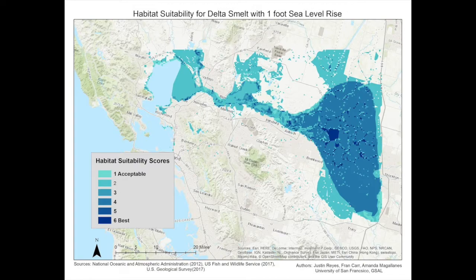Suitable habitat for Delta smelt includes the eastern part of San Pablo Bay, all of Suisun Bay, and the whole Delta. The most suitable habitat may be further east in the Delta where there are more sloughs, channels, food sources, tributaries, and wetland habitats available. Although they may be found in San Pablo Bay and Suisun Bay, it is unlikely they will definitely inhabit or migrate to those areas due to higher salinities. It is more likely that they will inhabit the Delta due to more freshwater outflow. Hence, the Delta was rated as the best suitable habitat.